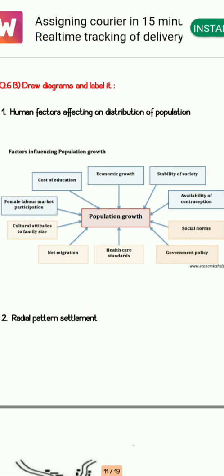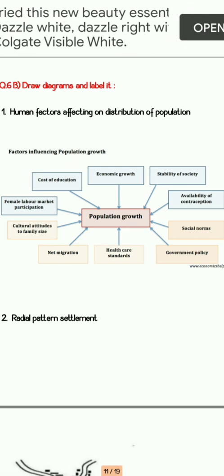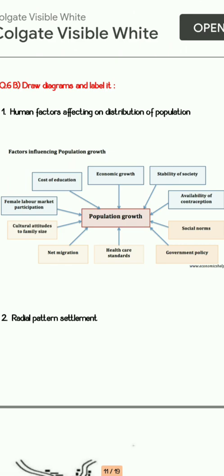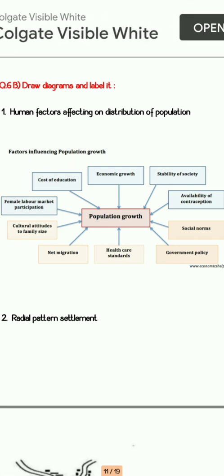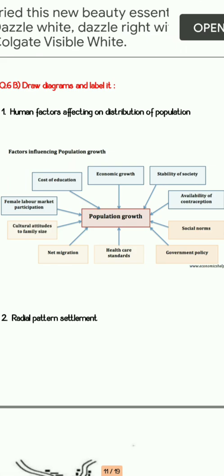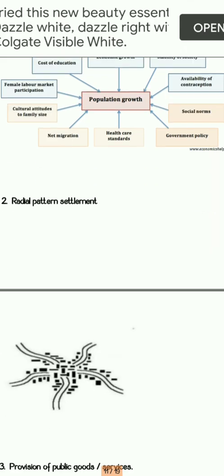Next is question number 6B: draw the neat and labeled diagram of human factors affecting the distribution of population growth. You have to make a flow chart type of diagram. Human factors include cost of education, economic growth, stability of society, net migration, healthcare standard, government policies, social norms, and availability of contraception. All these things are related to human factors which definitely affect the population.